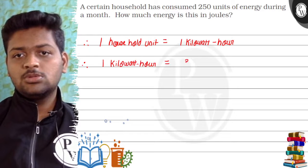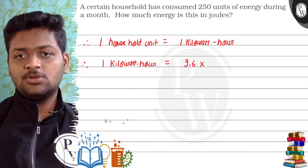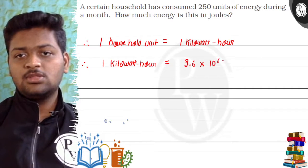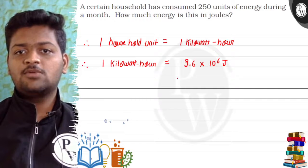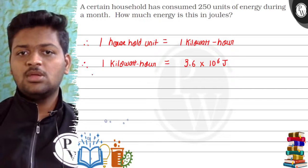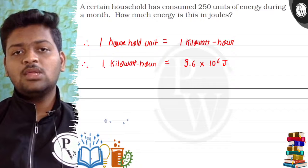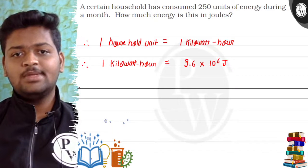One kilowatt hour is equal to 3.6 into 10 to the power 6 Joule. Your interconversion Joule per kilowatt hour. Confused? Note that kilowatt hour is the unit of energy and not of power, okay?